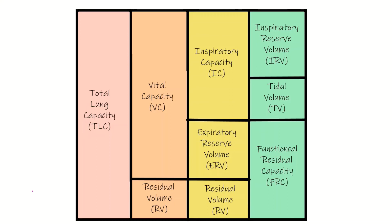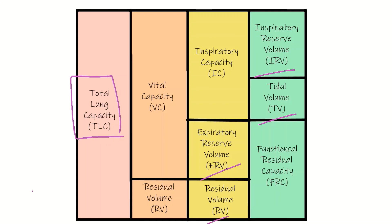What's fantastic about this chart is you can see the relationships. Total lung capacity equals FRC plus RV, or IC plus ERV plus RV, or IRV plus TV plus ERV plus RV. You don't need to do any math — you can just look at this chart and see it. So this is a great chart to have, and I hope it's helpful.